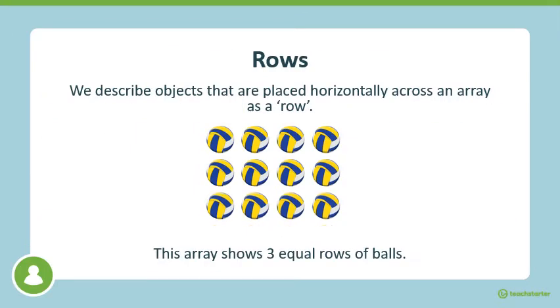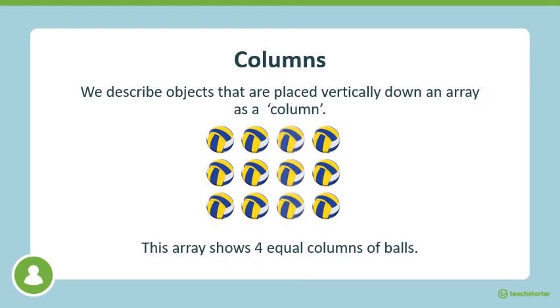We describe objects that are placed horizontally across an array as a row. So this array shows three equal rows of balls. We describe objects that are placed vertically down an array as a column. So this array shows four equal columns of balls.